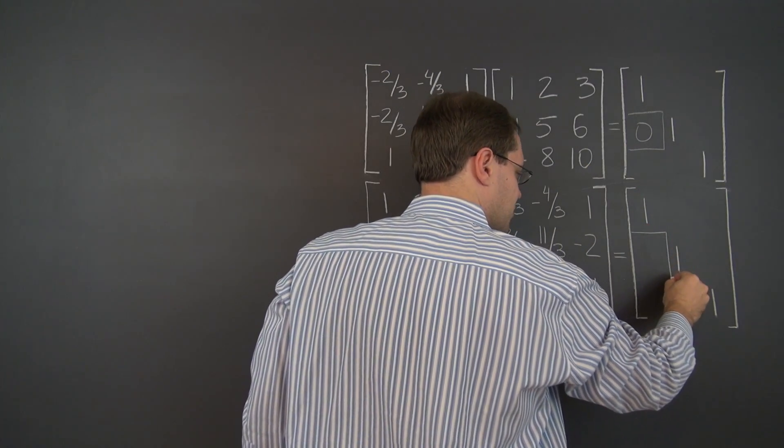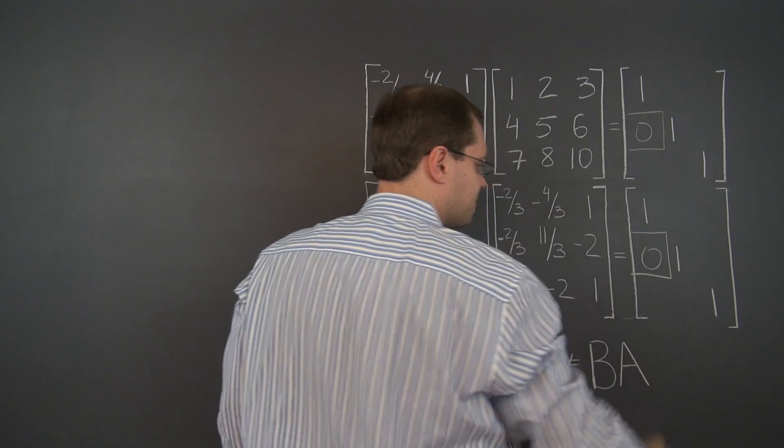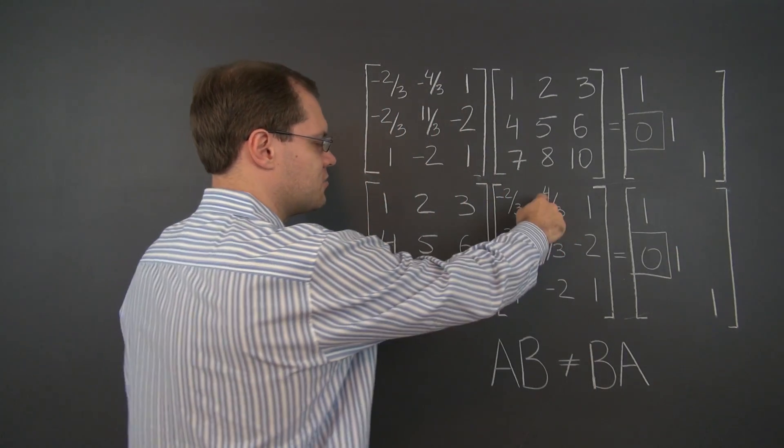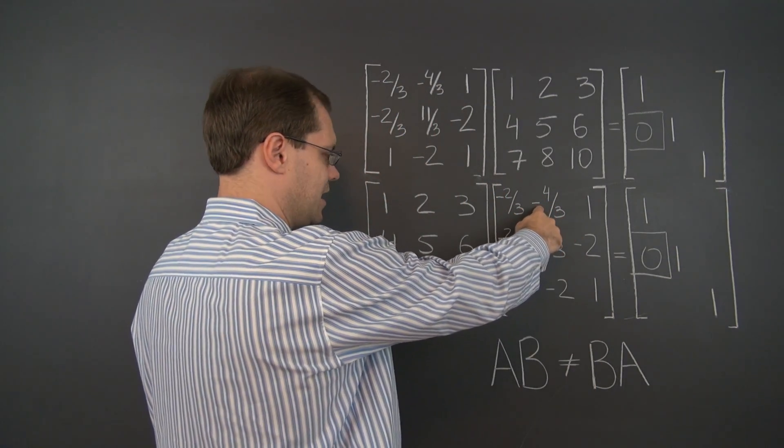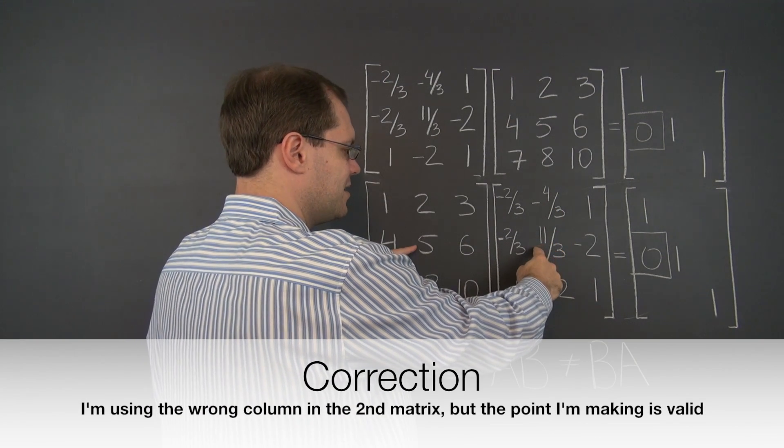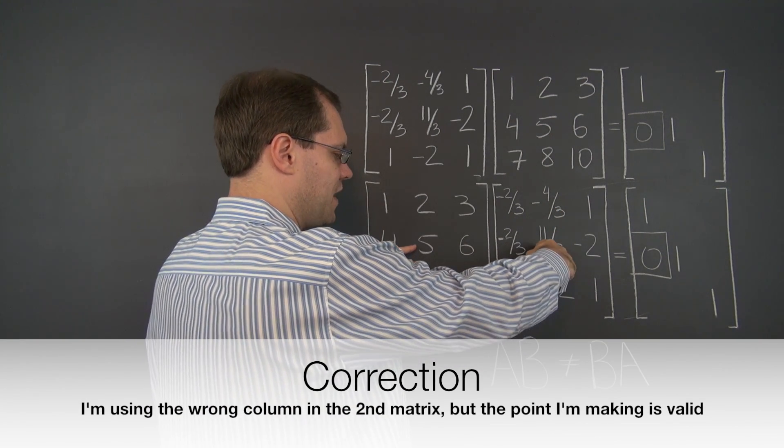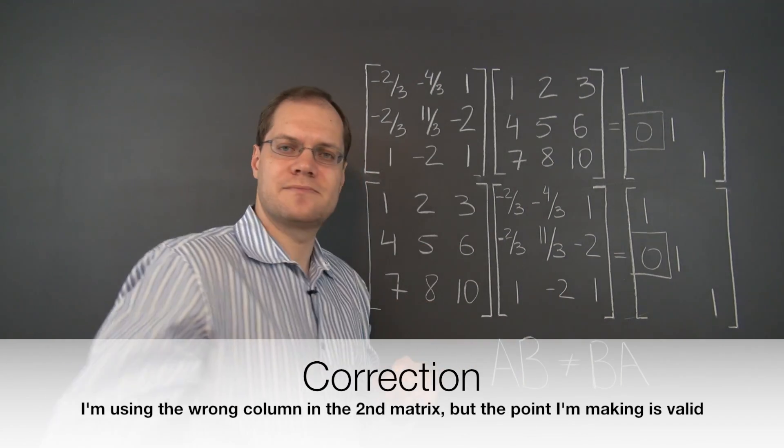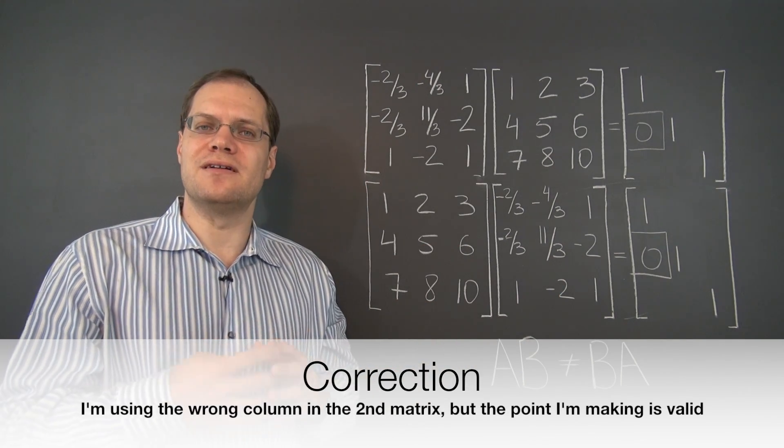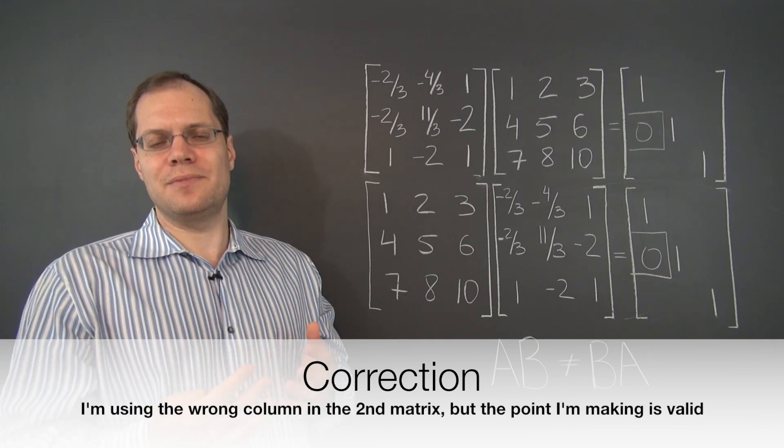Now let's look at this zero in this matrix. This here comes from negative four-thirds times four plus eleven-thirds times five minus two times six. So it's completely different sets of numbers coming together.